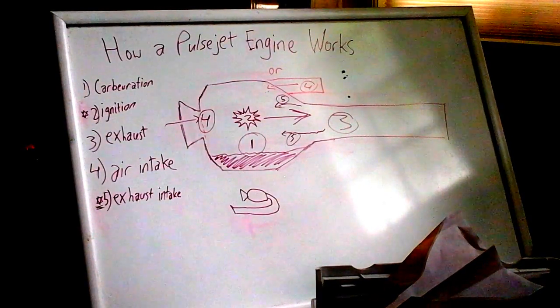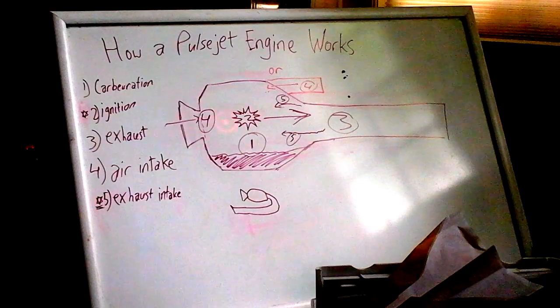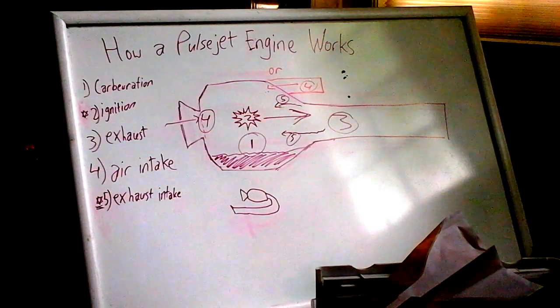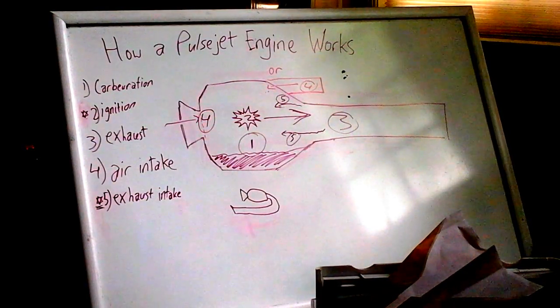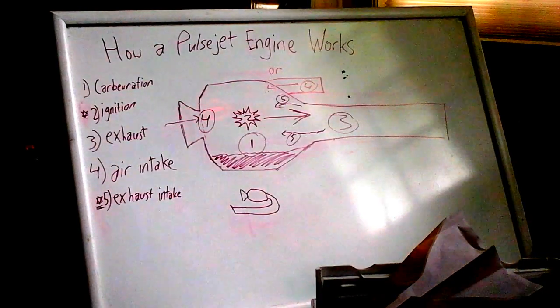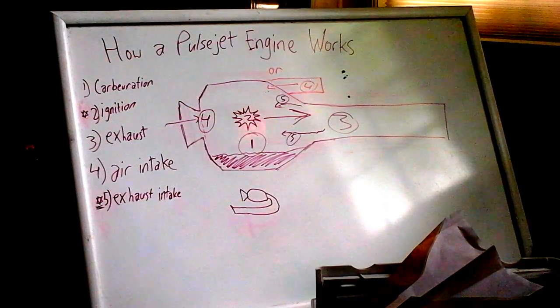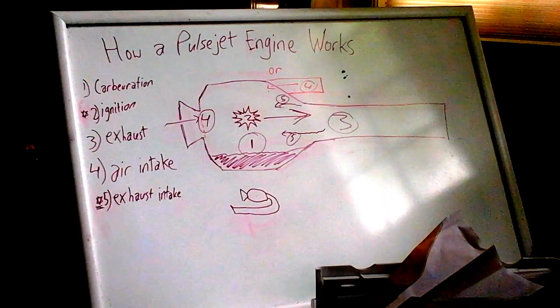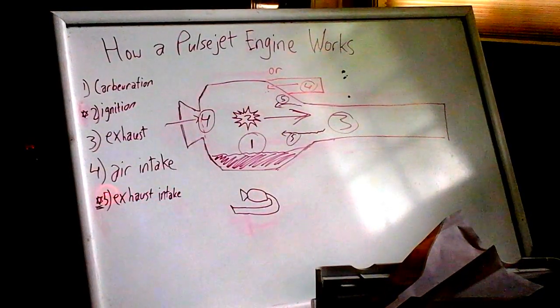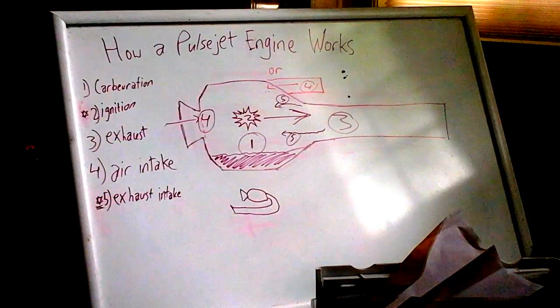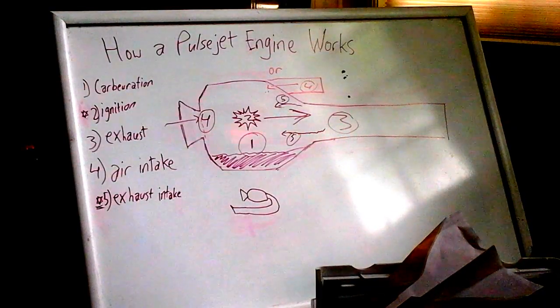But what happens is that this void allows air to move into the engine. With the valve here, the air would push the valve open and move into here until the pressure equalizes and the valve closes. Once that happens, the exhaust intake part kicks in. Now what I mean by that is that because of this partial void that drew the air in for the intake, you get particles from the exhaust that move into here.